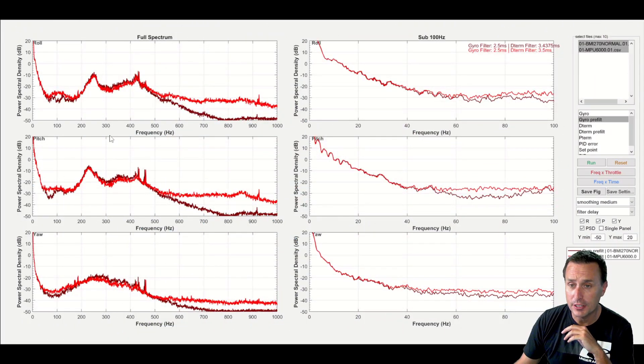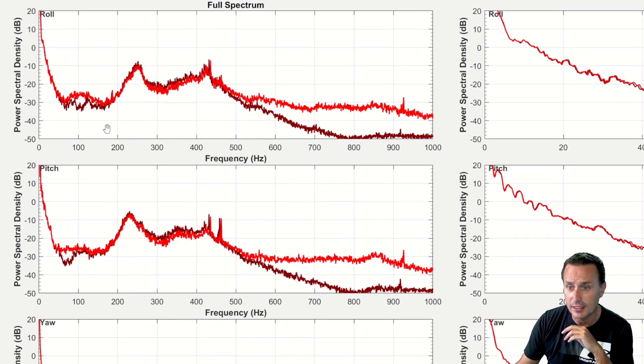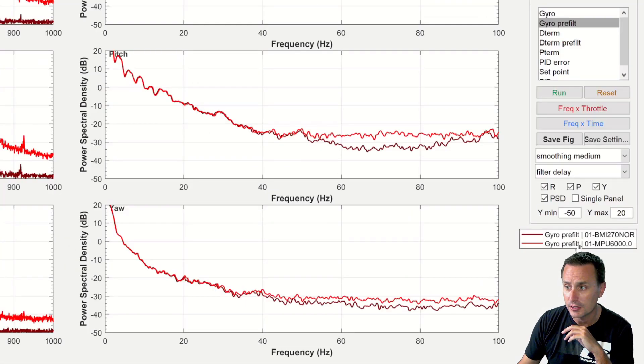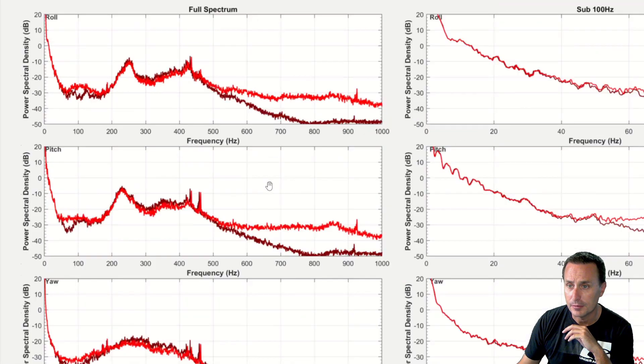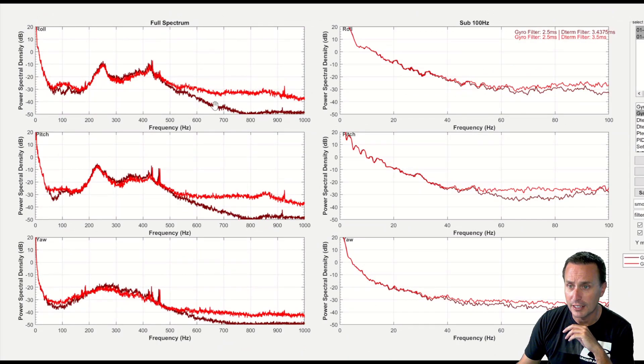Getting right into the data, you can see right here we are seeing that the BMI270, which is the darker red line here, and then the brighter red line is the MPU6000. Basically the darker red line is lower.